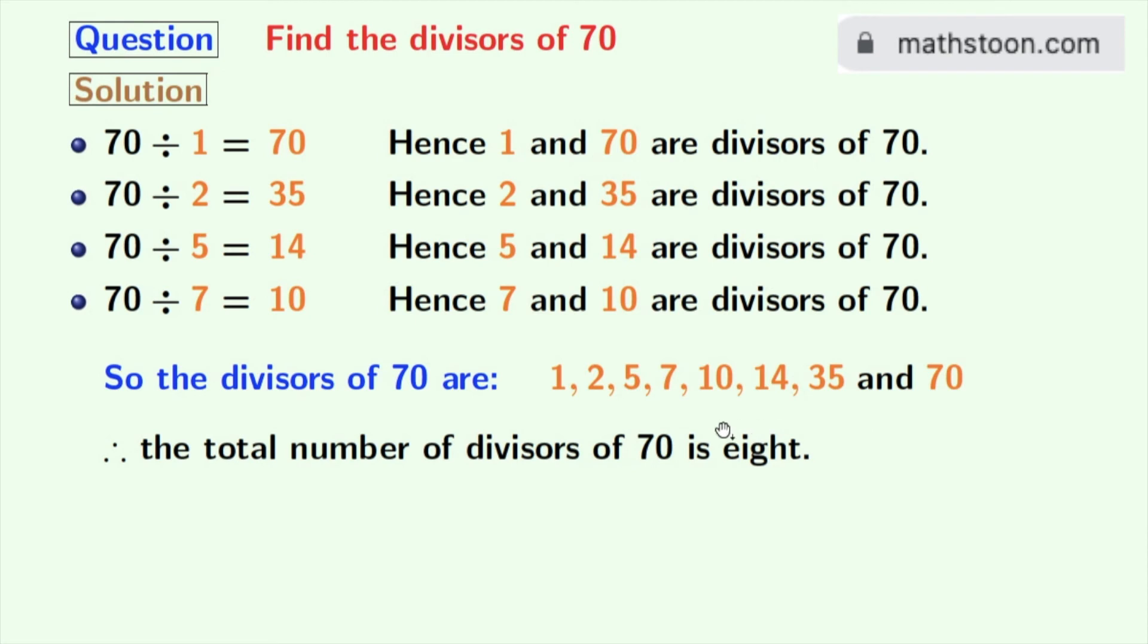Now look at these divisors. You can see that 2, 5, and 7 among these numbers are prime numbers, because these three numbers do not have any divisor other than 1 and the particular number itself.